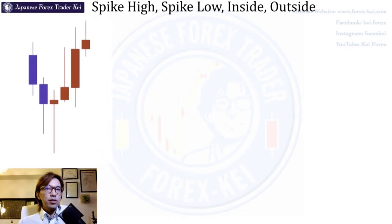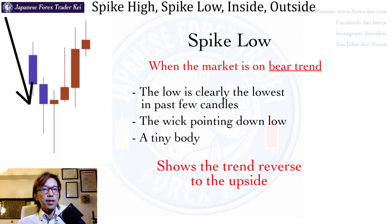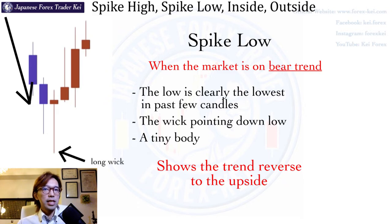Alright, the first one I'm introducing is the spike low. Look at this chart. It really works when this shows up during the downtrend. How you can identify this is that the low should be clearly all the way down from the previous low. The wick pointing downwards should be especially long, like in this chart example. And when you find this pin bar, you can call it a spike low.